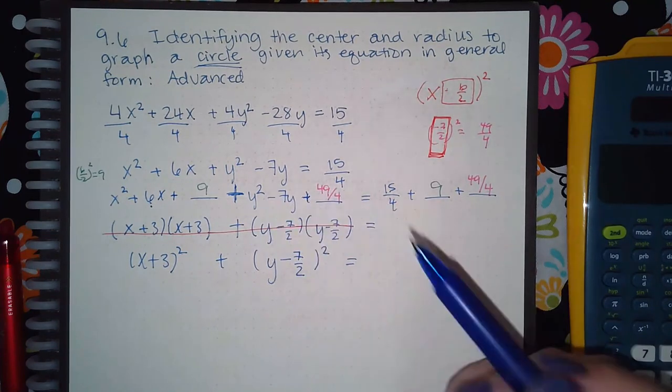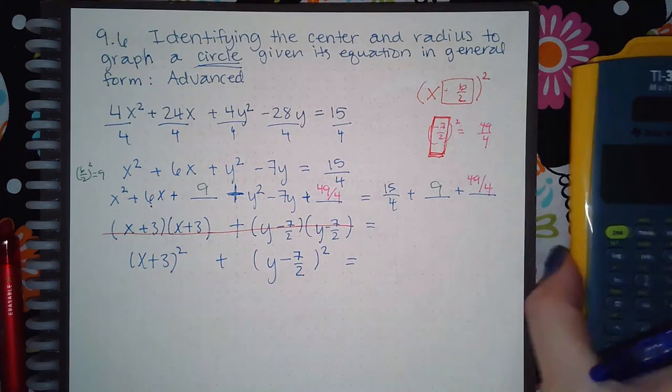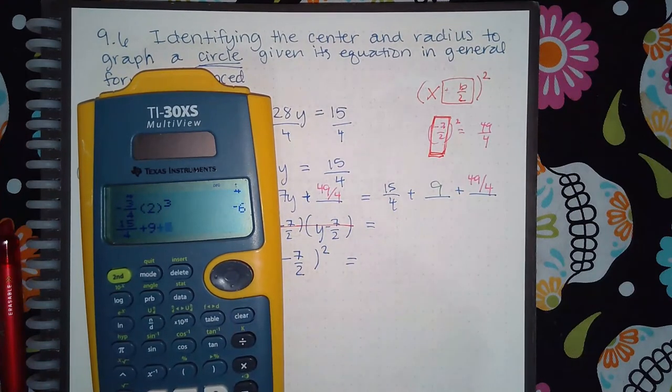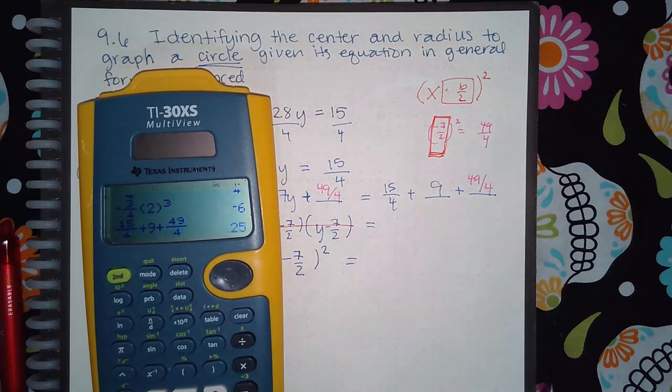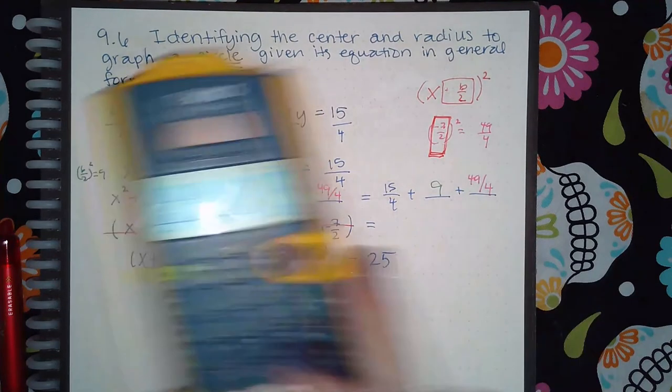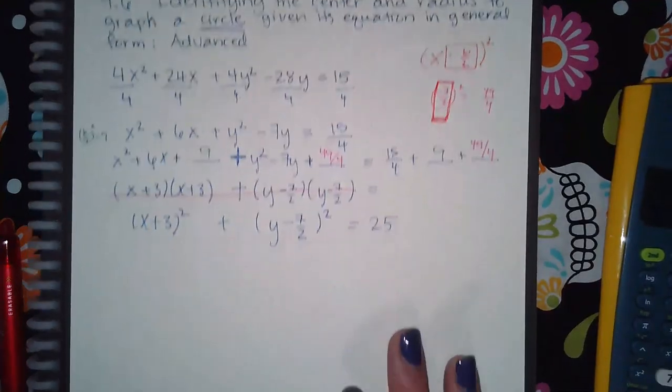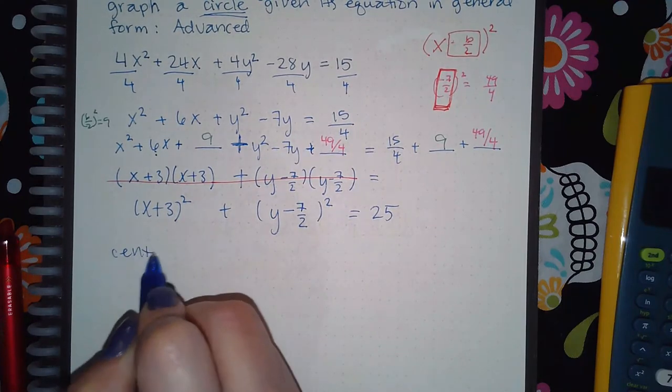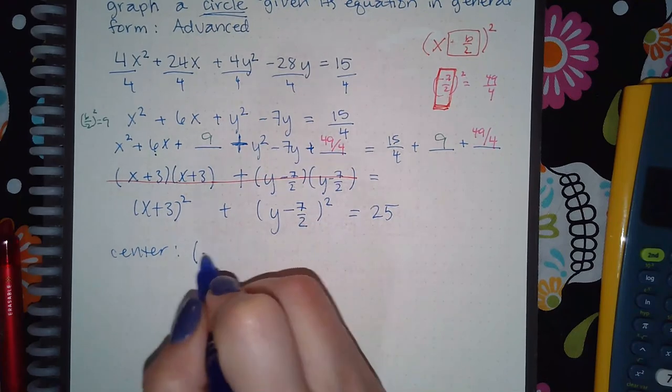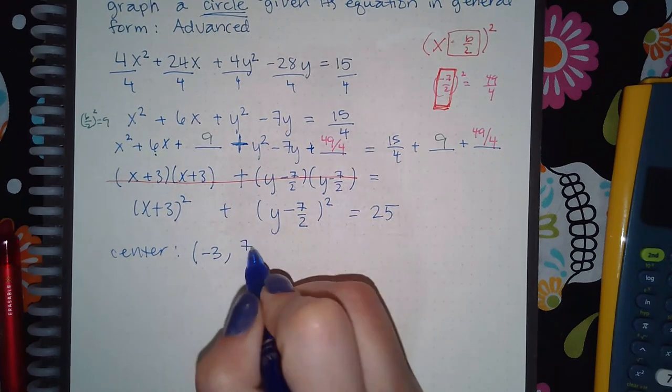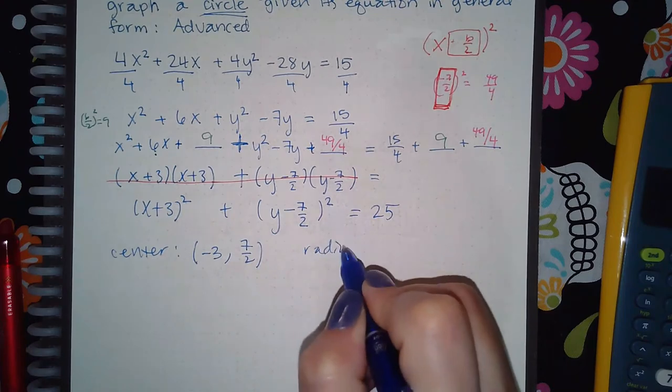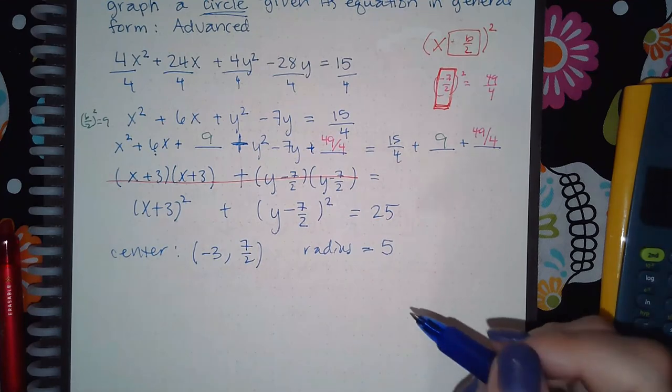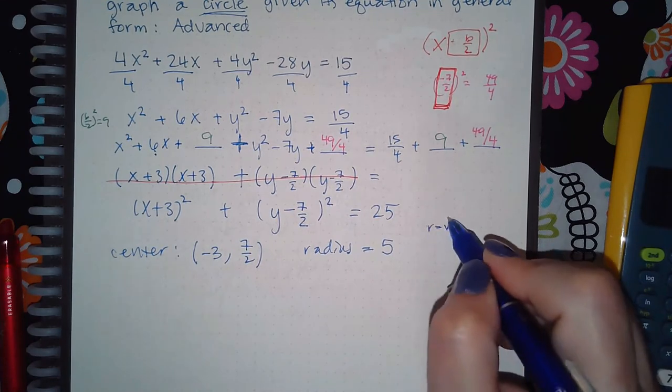But on the right hand side, let's see what we get: 15 over 4 plus 9 plus 49 over 4—we actually get 25, which is interesting. And so then if I want to get the center, it's going to be the opposite signs: so negative 3 and positive 7 halves. And then the radius is going to be the square root of 25, which is 5. r equals the square root of 25.